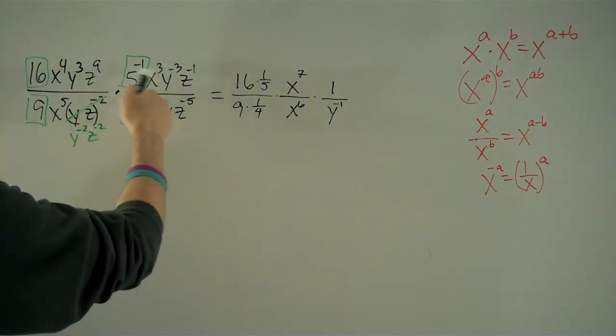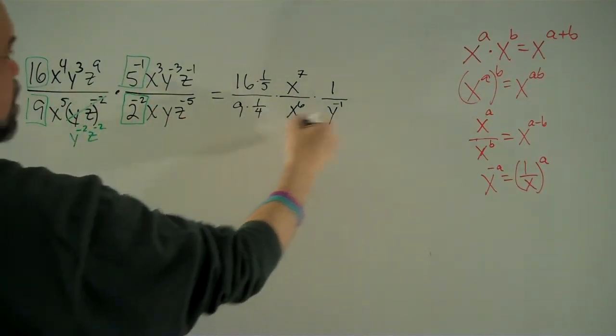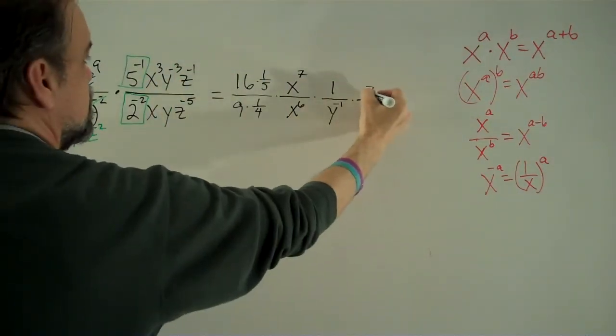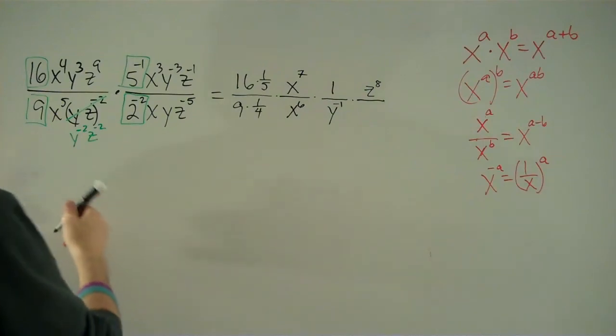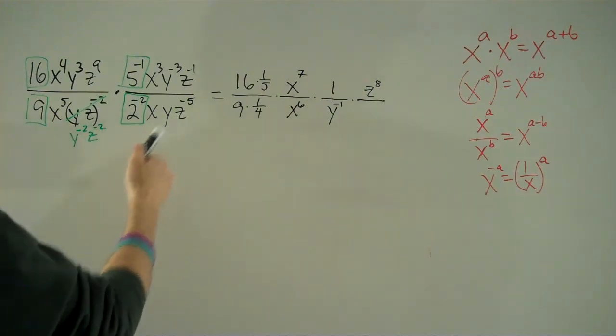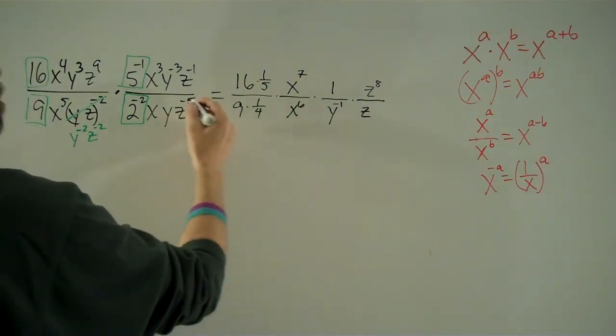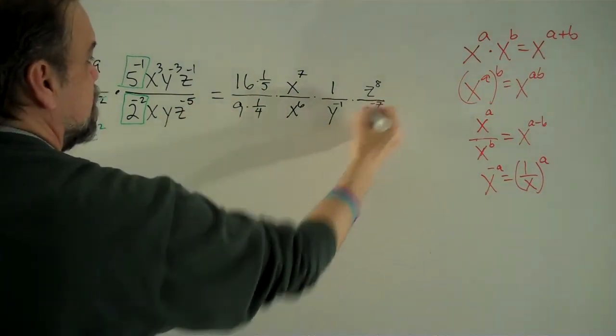And our z's, we have z to the 9th times z to the negative 1, that's z to the 9 minus 1, z to the 8th, over z to the negative 2 times z to the negative 5. That's z to the negative 2 plus negative 5, negative 7.